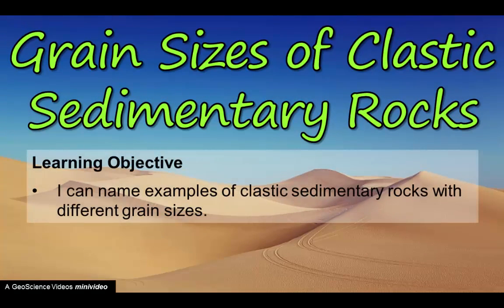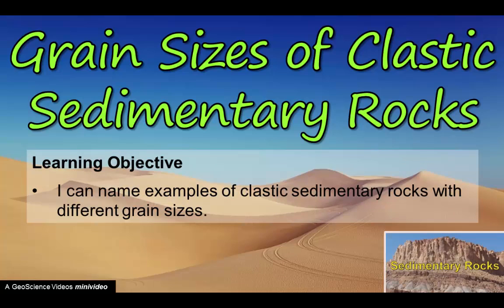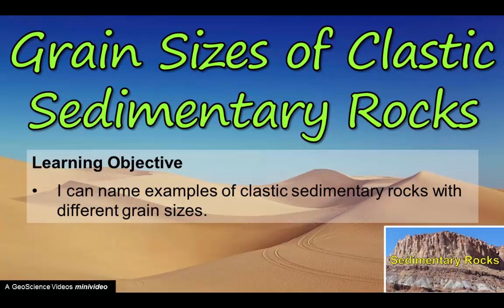Clastic rocks are the most common type of sedimentary rocks found on Earth's surface. This mini-video describes how grain size is used to classify these rocks. Check out the related video for a discussion of the classification of all types of sedimentary rocks.